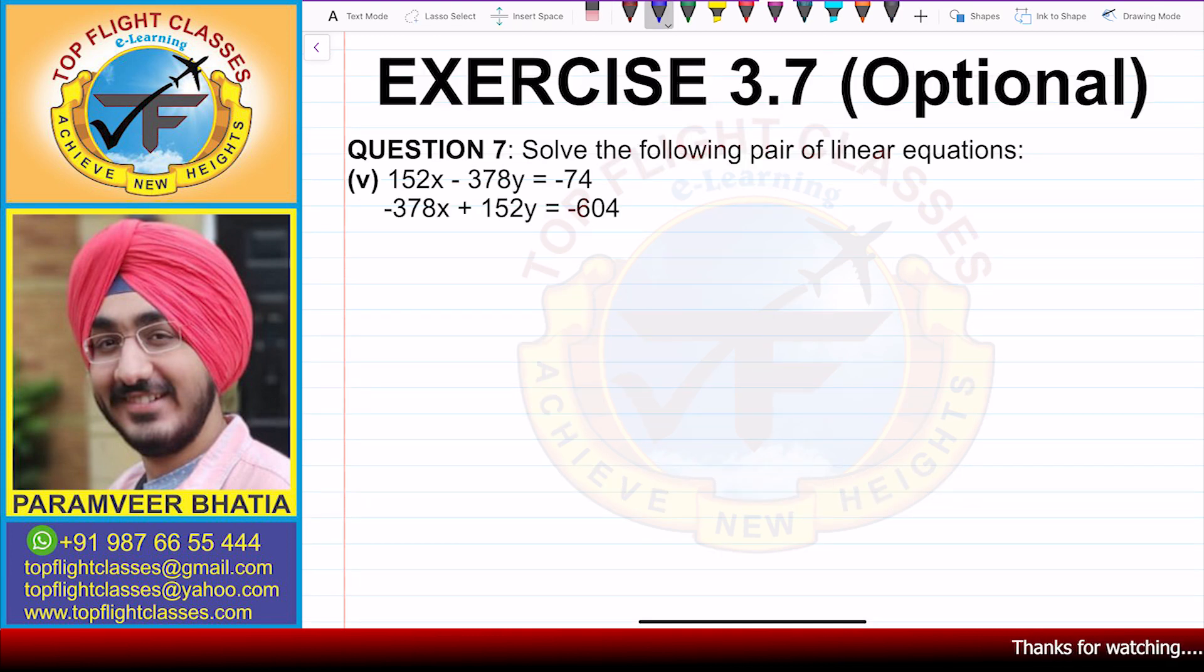we will solve the fifth part of question number 7 of exercise 3.7, which is the optional exercise. Question number 7 says solve the following pair of linear equations. The fifth part is 152x - 378y = -74 and -378x + 152y = -604.